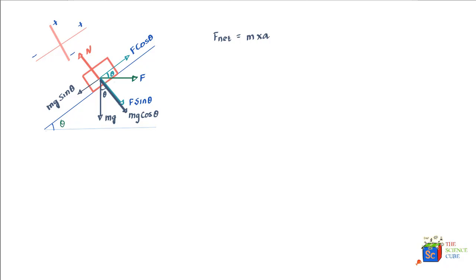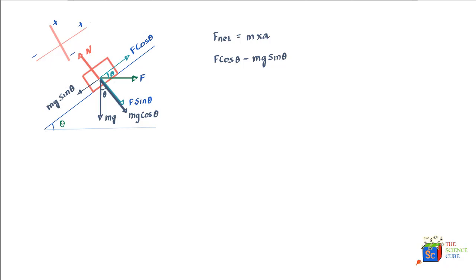Looking at what's happening along the x-axis, we can see there are two forces acting on the mass: one is F cos theta and the other is mg sin theta. F cos theta is positive because it acts in the upward direction, and mg sin theta acts in the downward direction. This is the sum of forces along the x-axis, and it equals mass times acceleration.